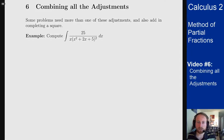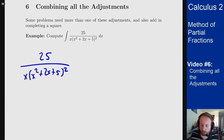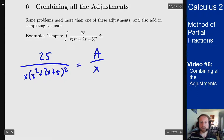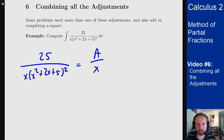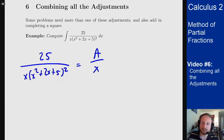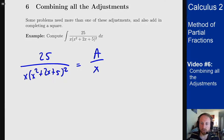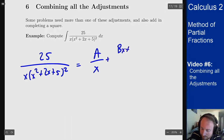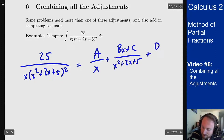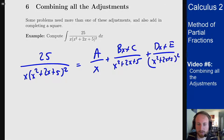What should our partial fraction decomposition look like for this fraction? We know one term is A over x. For the repeated quadratic factor, we combine our ideas about quadratic factors and repeated factors: we need Bx + C over (x² + 2x + 5) and Dx + E over (x² + 2x + 5)². That's our setup for this decomposition.